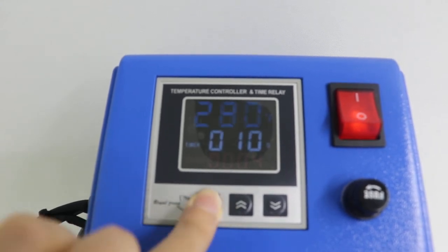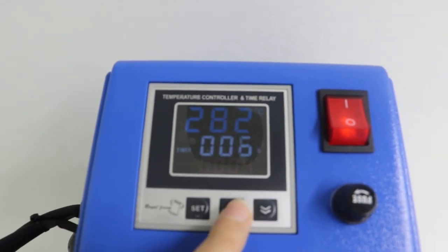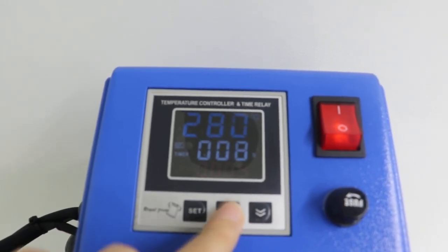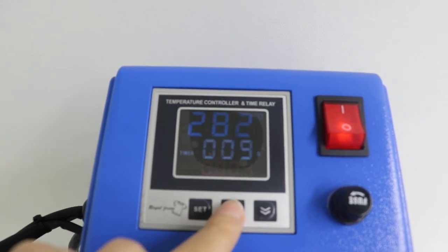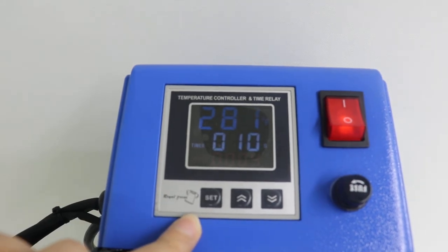And then press it the second time. It's time setting mode. Press the button to decrease, and this button to increase time. Use 10 seconds for the transfer on T-shirt. And then press the third time to finish setting.